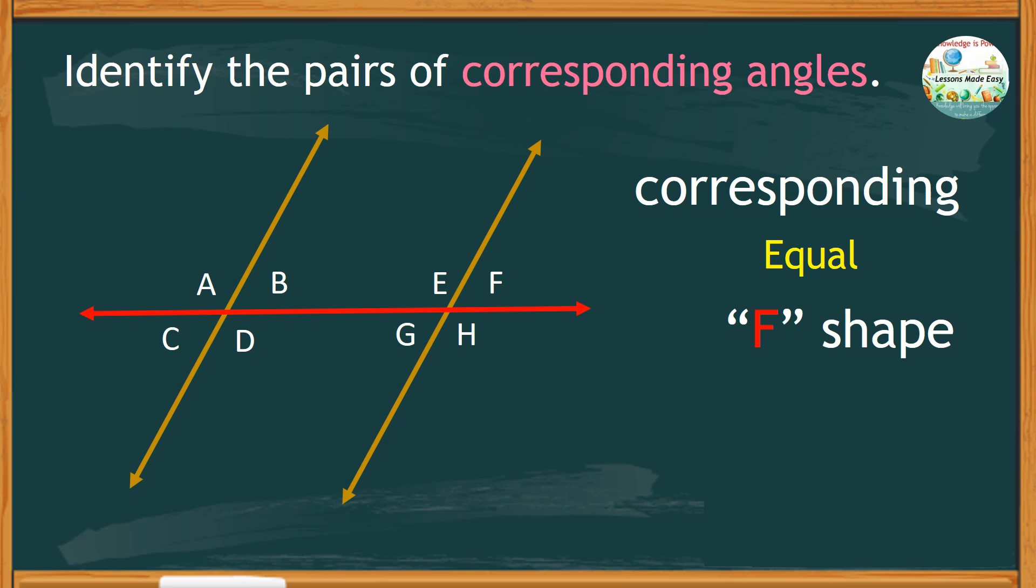Can you see an F shape in this illustration? Let's look at the upper part of the transversal. Right here is an F shape, is it not? Only the F shape is upside down and these two angles are equal, angles B and F.